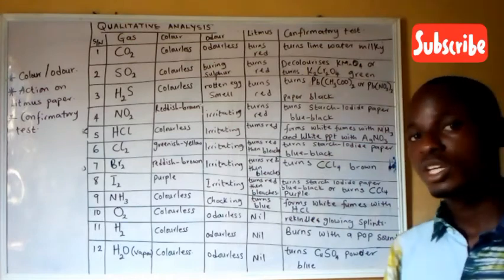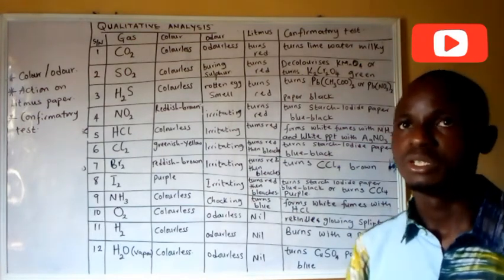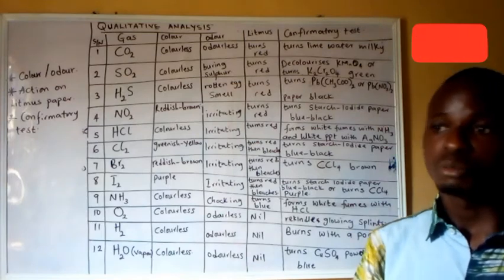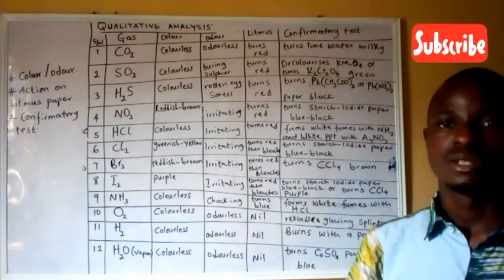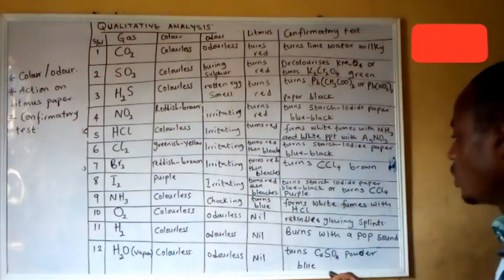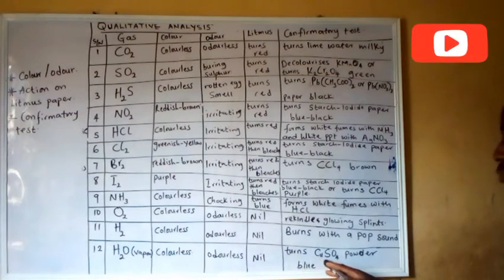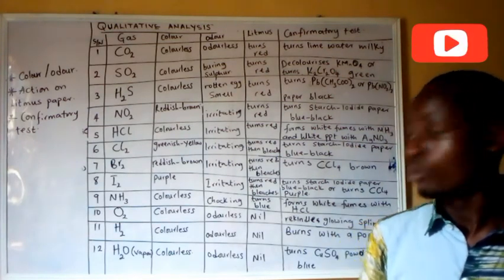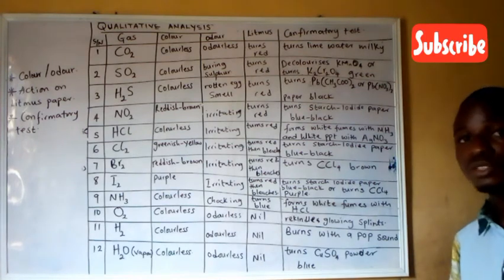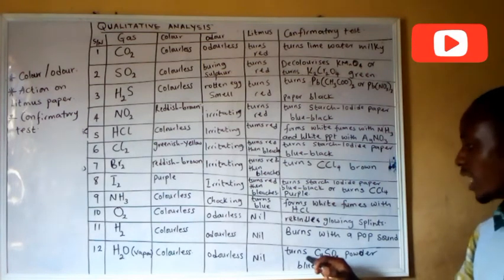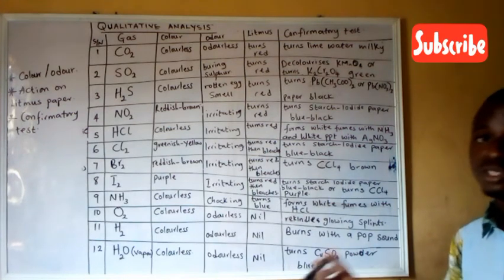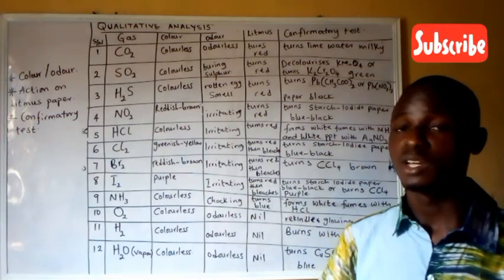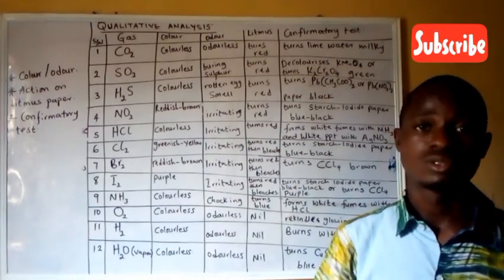Water vapor can be identified by two methods. The first: placing a stopper towards the gas shows condensation forming a liquid on the stopper. The confirmatory test: it turns white anhydrous copper(II) tetraoxosulphate(VI) powder blue, due to the formation of hydrated copper(II) tetraoxosulphate(VI). Thanks for watching — more videos on qualitative and quantitative analysis are coming. Please subscribe.